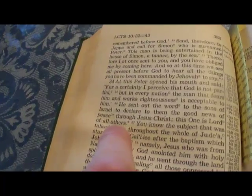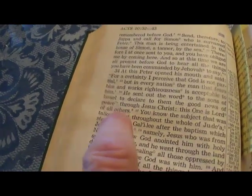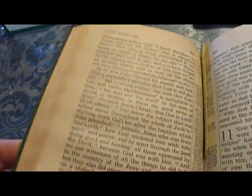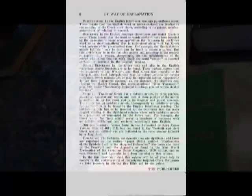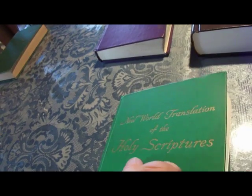Jesus Christ is Lord of all others — they can't say God is the Lord of all, so Jesus is the Lord of all others. This is not in the Greek, as we will see when we reach the interlinears, and they didn't put it in brackets. They have a rule where they say that when they add words to explain the text better they put brackets. These denote that the word or words enclosed have been inserted by the translator to make some application shown by the Greek word. So words added are supposed to be in brackets — this is from the Kingdom Interlinear Translation of 1969. But they didn't follow this rule.